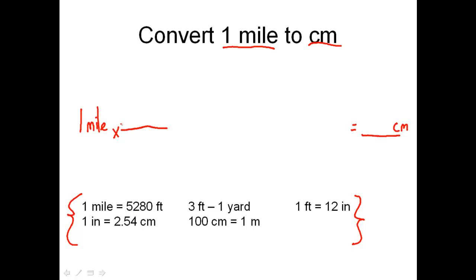The question is, where does mile go — on the top or the bottom? The answer is you need to write one mile on the bottom and 5,280 feet on top, because we need to cancel out the unit mile, and we cancel a unit out when we divide by it. Now I'm in the unit feet, and miles is gone. I need another conversion factor to take me from feet closer towards centimeters.